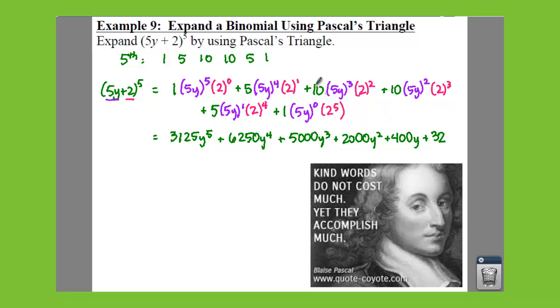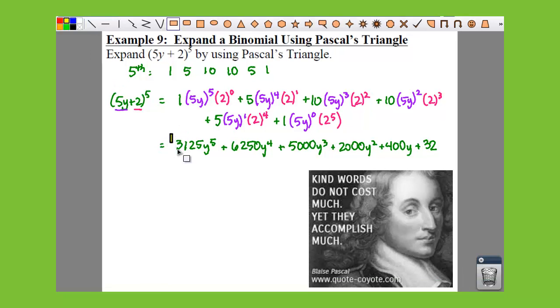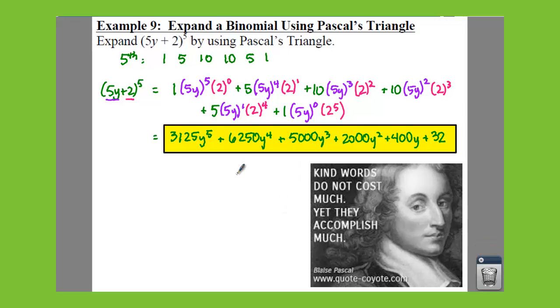So by using Blaise Pascal's triangle to find our coefficients, that saved us a little bit of time. Even though we still had some large numbers to multiply through here in the end.